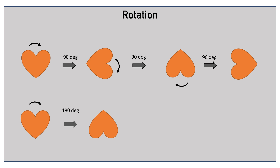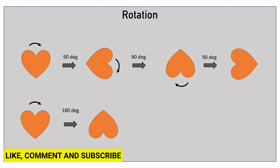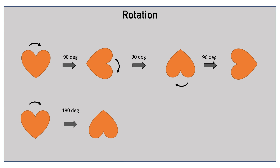Rotating an object by 180 degrees is simply rotating the object twice by 90 degrees. The heart that was facing up, after a 180-degree rotation, faces down. Similarly, rotating an object by 270 degrees is simply rotating the object thrice by 90 degrees. The heart that was facing up, after a 270-degree rotation, faces left.